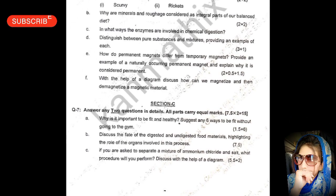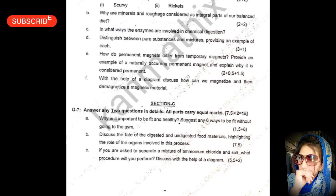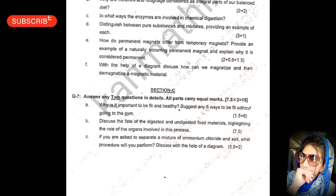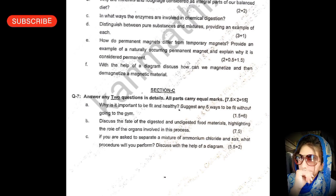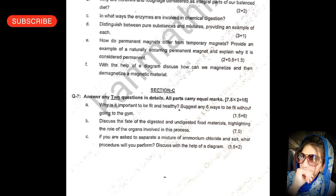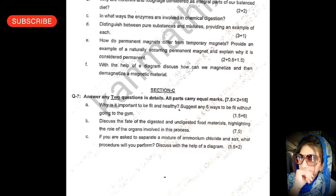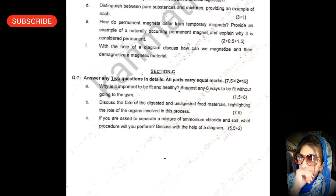The questions include: why are minerals and roughage considered an integral part of our balanced diet? In what ways are enzymes involved in chemical reactions? Distinguish between pure substances and mixtures, providing an example of each. How do permanent magnets differ from temporary magnets? Provide an example of a naturally occurring permanent magnet and explain why it is considered permanent.